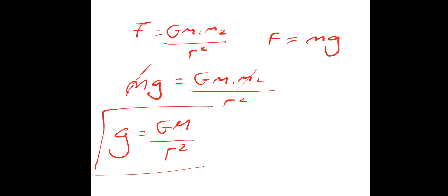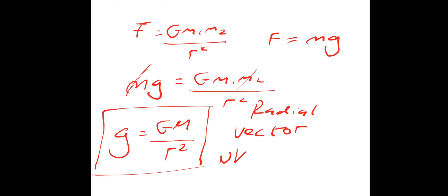This is the equation that we'll be using today. Gravitational field strength — this is for a radial field. It's also a vector quantity. And it's got two units: we've got newtons per kilogram, and we've got metres per second squared, the acceleration due to gravity. Both mean the same thing.